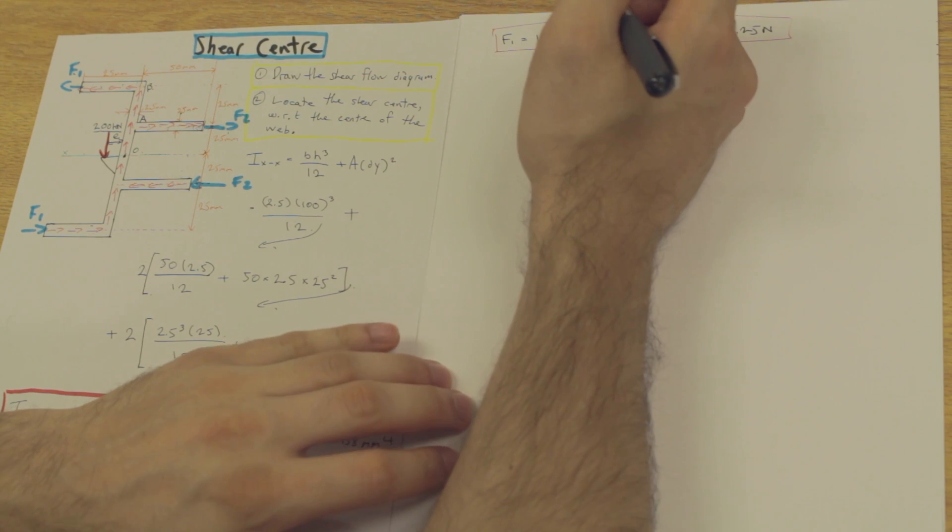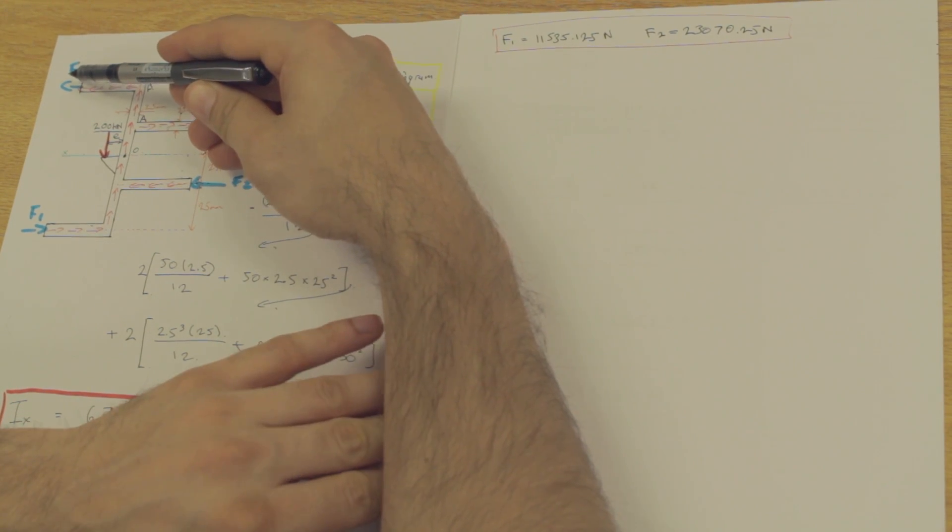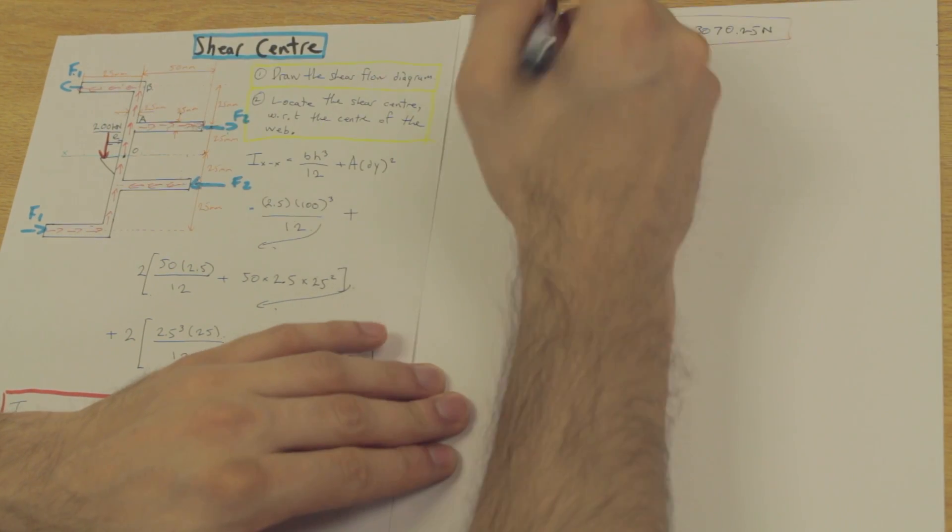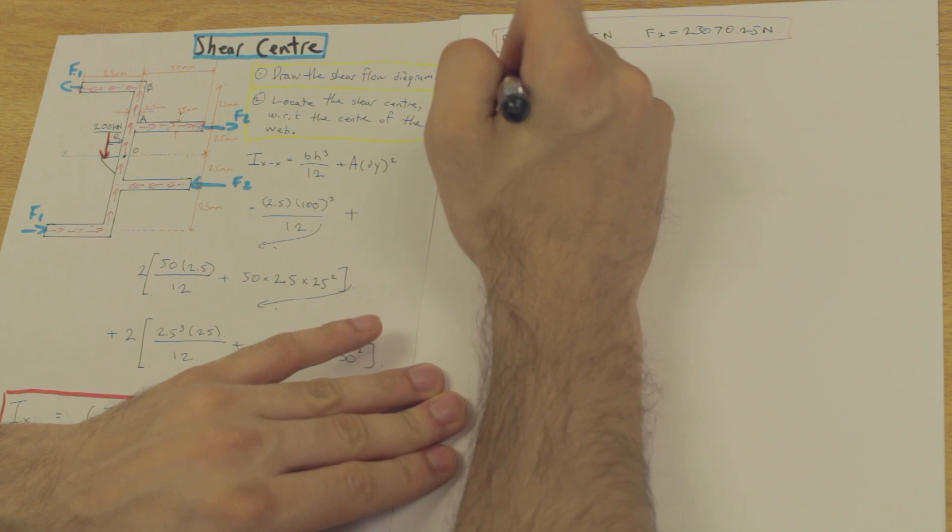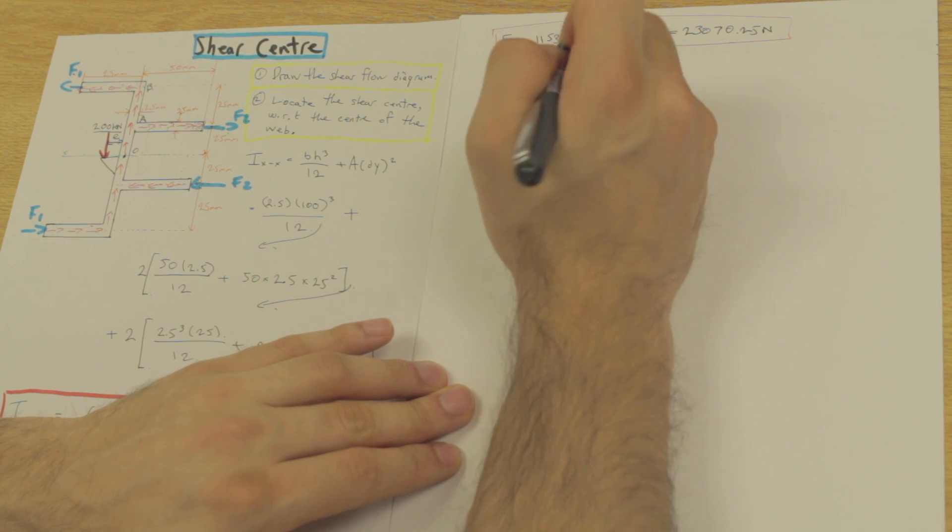So if you remember from physics one or two, the couple moment can be calculated by multiplying the value of the force by the distance connecting the arms. So let's start with F1 in section B. We're going to write the moments about point O.